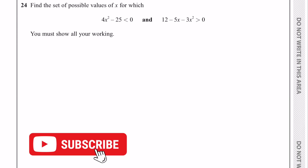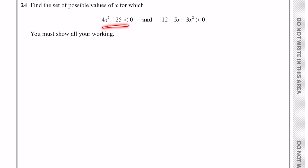Here's a question on quadratic inequalities. We need to find the value of x that satisfies both inequalities, or the range of values of x. Let's start with the first inequality. I'm going to write this as (2x)² − 5², because I can use the difference of two squares to write it as (2x + 5)(2x − 5). I have a video on the difference of two squares if you want to understand that in more detail.